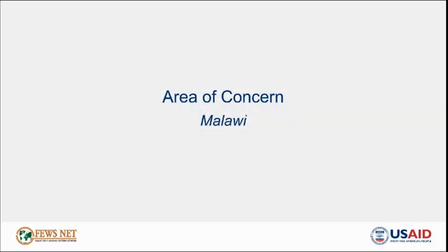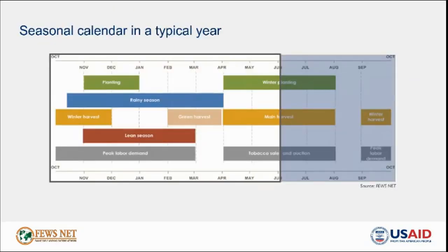Hi, everyone. I'm Mikael Teswasilase and I'll be presenting on Malawi. A quick reminder on where we are in the seasonal calendar for Malawi. Currently, the rainy season is ongoing with the winter harvest of maize, rice, beans, sweet potatoes, tomatoes, and some other vegetable crops. Additionally, households are planting for the main 2022-23 agricultural season, which will be harvested in 2023.